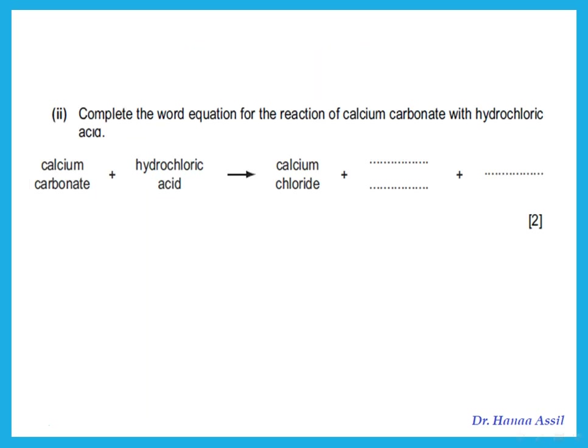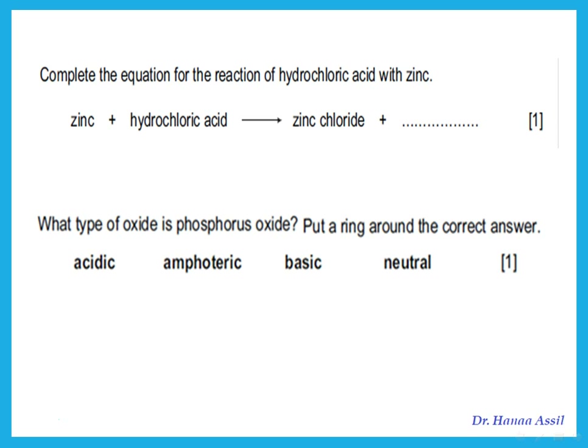Complete the word equation: acid plus carbonate gives salt, carbon dioxide, and water. So calcium carbonate plus hydrochloric acid gives calcium chloride plus carbon dioxide plus water. For zinc plus hydrochloric acid — this is metal plus acid — the products are zinc chloride plus hydrogen gas.